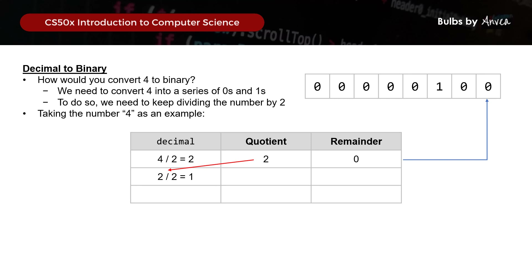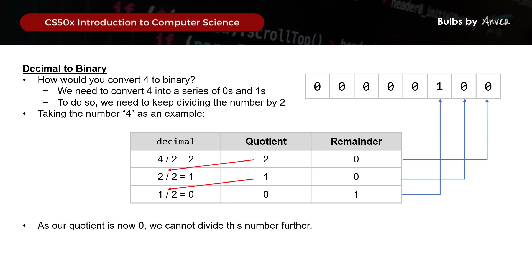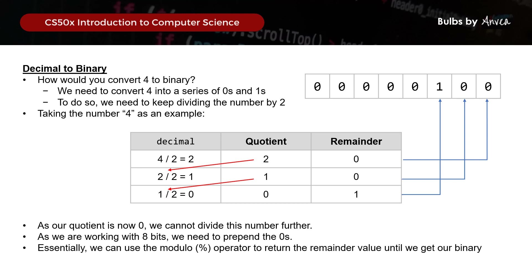Moving on, we take the quotient of 2 divided by 2 again, where the quotient is 1 and the remainder is 0, which goes into the next position of the binary array. Then 1 divided by 2 gives a quotient of 0 and remainder of 1. Since the quotient is 0, we cannot divide this number further. As we're working with 8 bits, we fill the remaining binary values as 0. This is how you get the binary value of 4 - we can use the modulo operator to return the remainder values until we get our full binary.